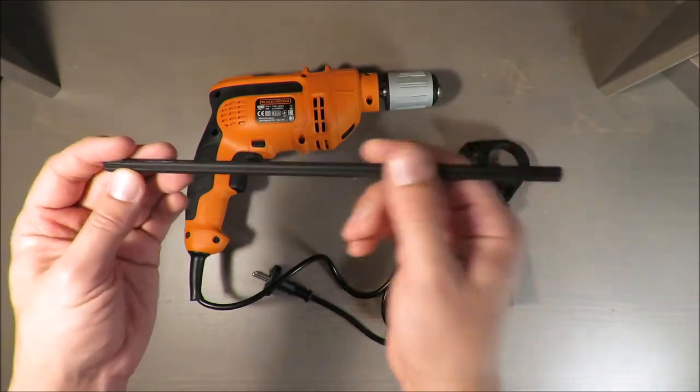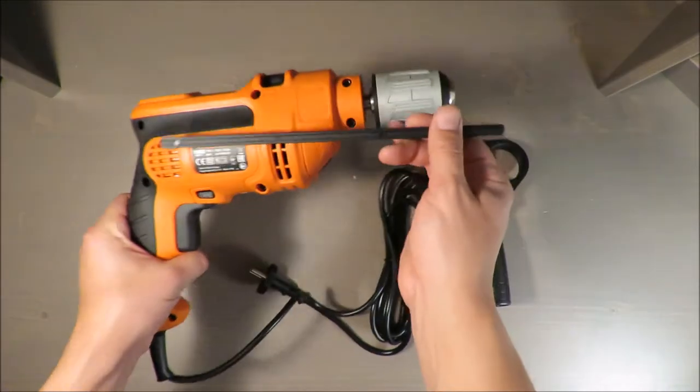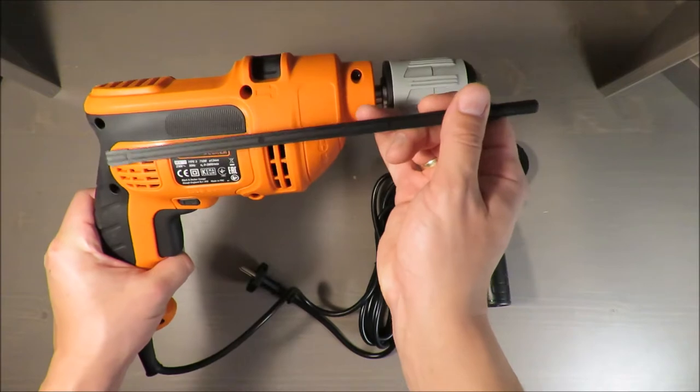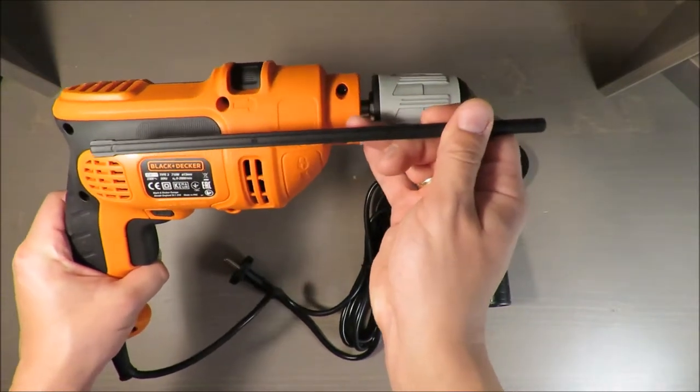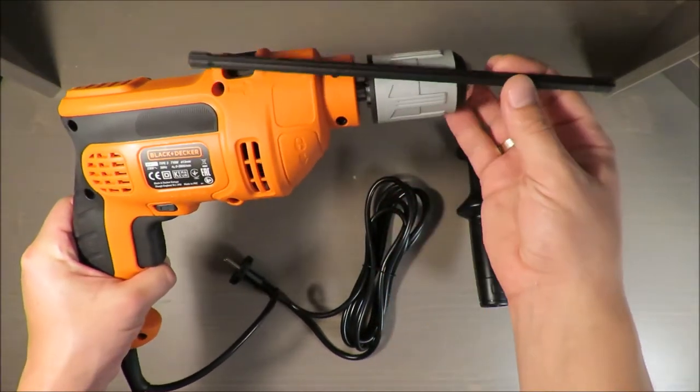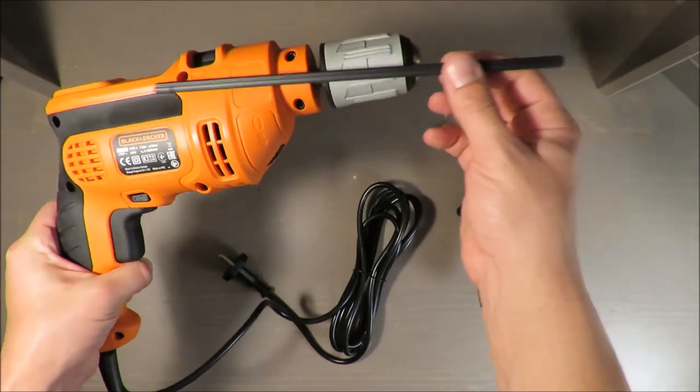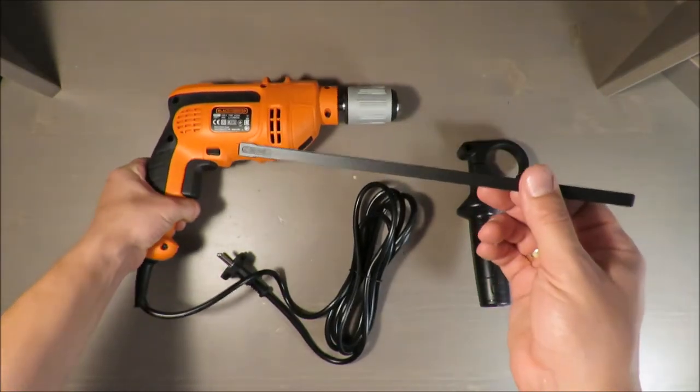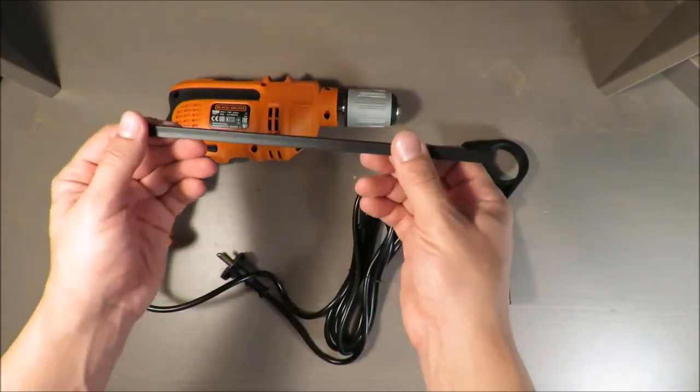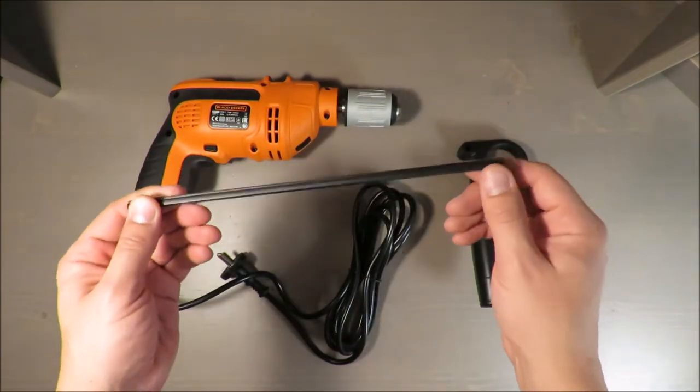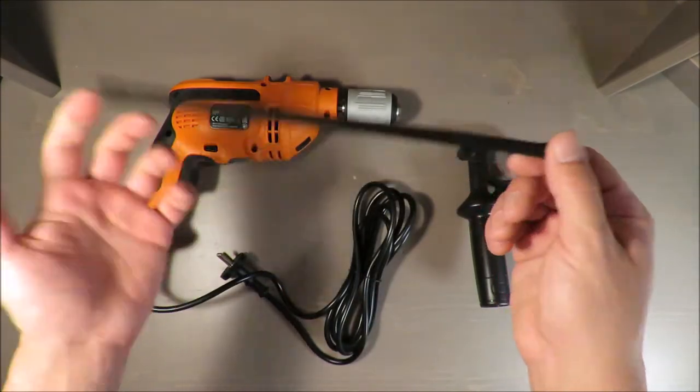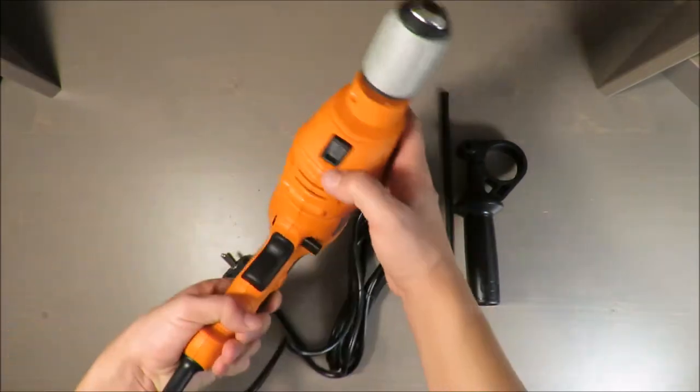This depth meter allows you to make holes with the depth that is required. So you touch it to the side, blocking, and then you can easily drill until the plastic part will contact the wall or material that you are drilling in. That allows you to make precision drill holes.